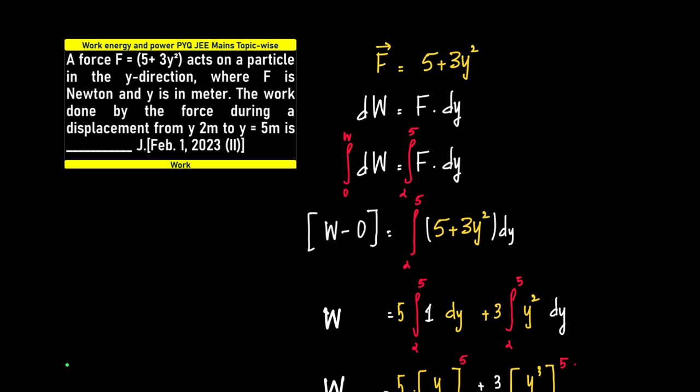So what is the concept? dW is equal to F dy. If you integrate dW from 0 to W and integrate F from the given integral is 2 to 5, so we have 2 to 5.